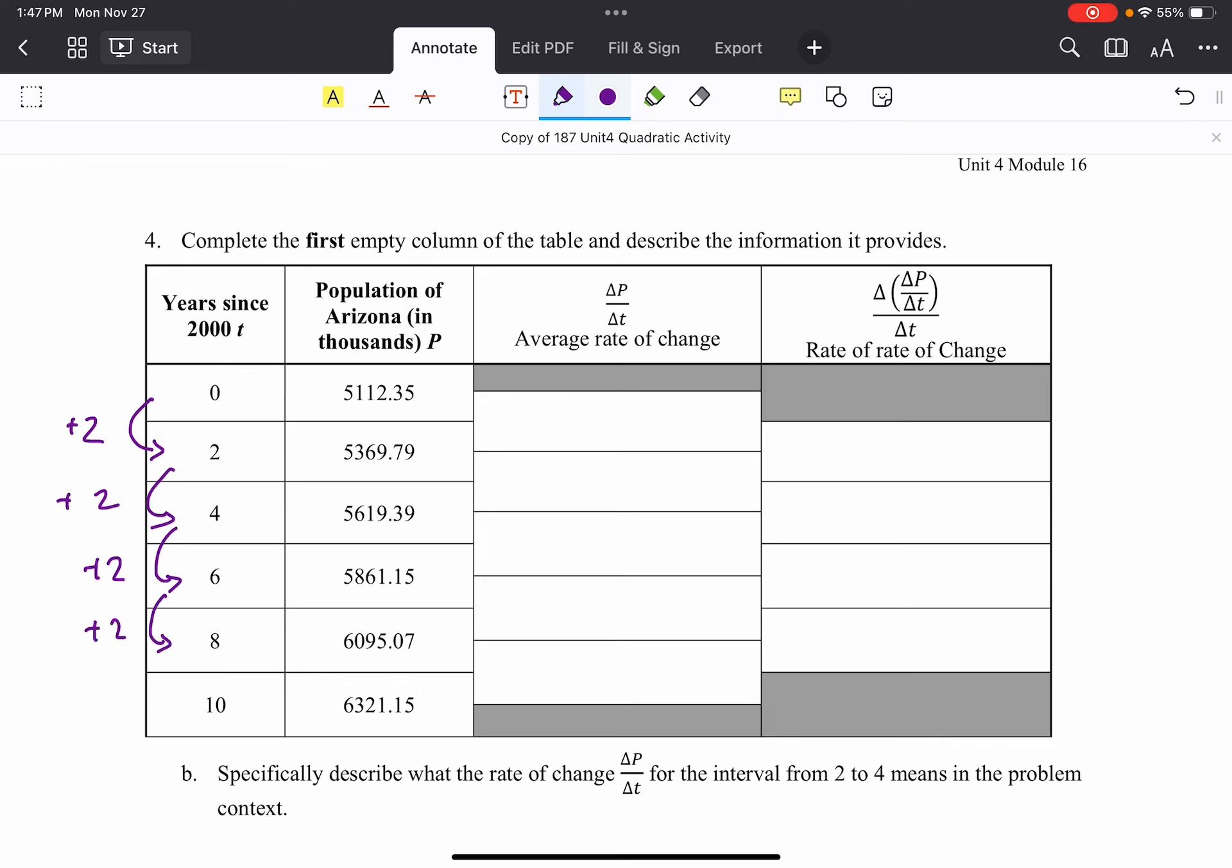So plus 2, plus 2. And so what that means here is I would take the difference in my y's. So 5,369.79 minus 5,102.35 all divided by 2. And I would come out with 128.72, you know, 1,000 people per year. And I'm running out of space. And I would keep doing this for all of them. And so this comes out to 124.8 and 120.88. And I noticed that this rate of change, this average rate of change, is getting smaller and smaller. But it is positive.